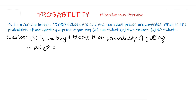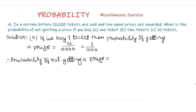Part A: if we buy 1 ticket, then probability of getting a prize equals 10 upon 10,000. As there are 10 prize-winning tickets and the total number of tickets is 10,000, the probability of getting a prize is 10/10,000 = 1/1,000. Therefore, probability of not getting a prize equals 1 − 1/1,000 = 999/1,000.